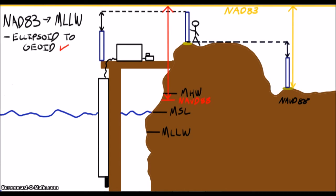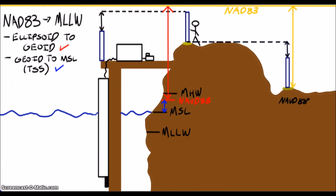One, the distance from the ellipsoid to the geoid. Two, the distance from the geoid to mean sea level, or TSS. And three, the difference between mean sea level and mean lower low water at each point.